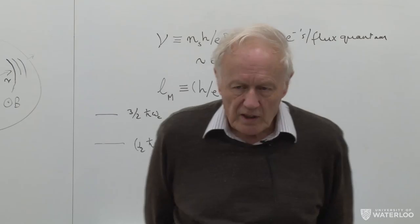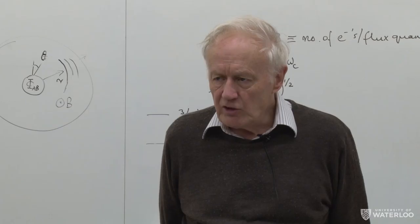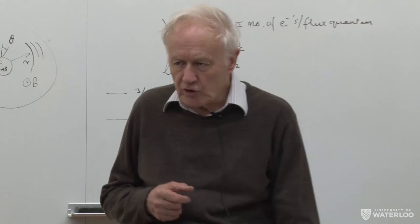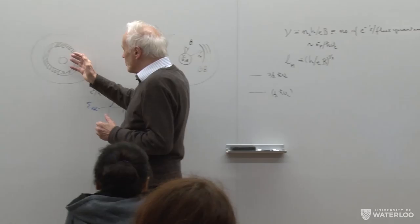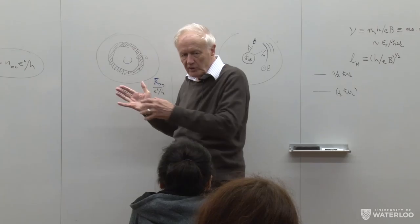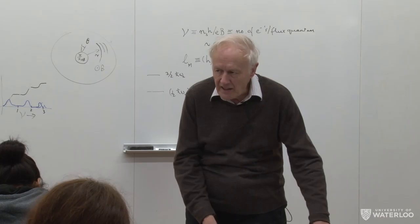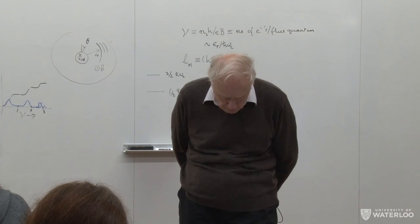Let me go on to a slightly different way of looking at the integral quantum Hall effect. This alternative point of view focuses on the edge states rather than the bulk. Historically it's been very important, focusing attention on what's going on at the edge of the sample. For a finite sample, over most of the sample the potential is flat and the choice of gauge doesn't matter much. But close to the edge we must be more careful, and the convenient choice is the Landau gauge.